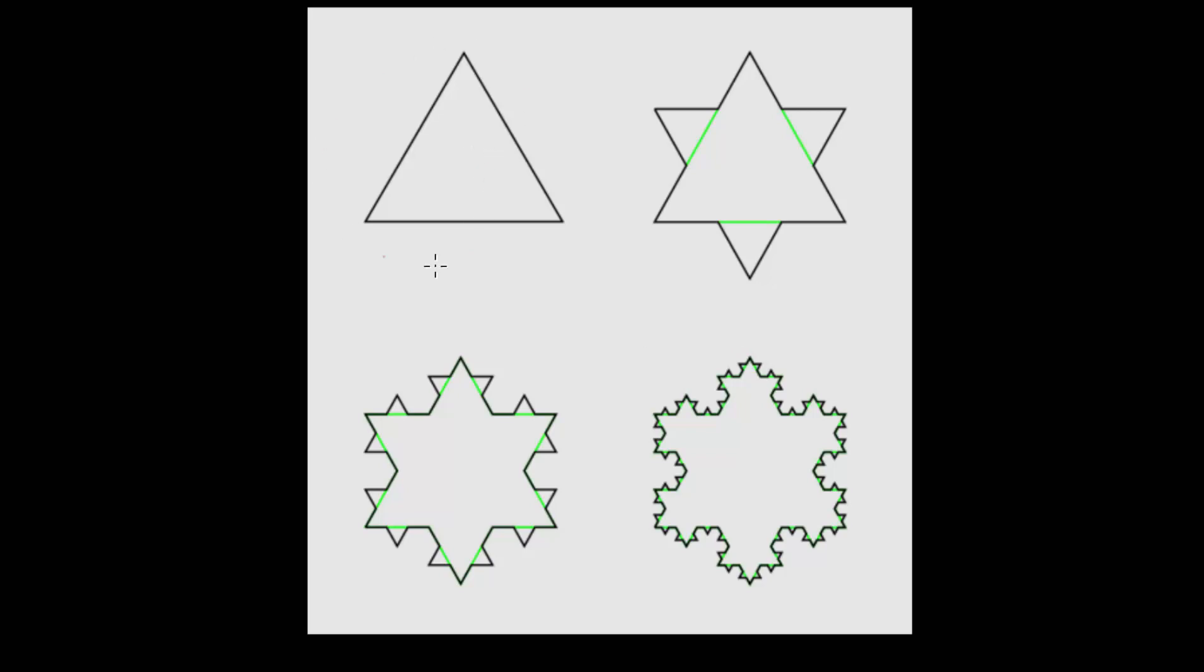This is our starting shape. We start with an equilateral triangle. What we'll do to create the snowflake is take each of these side lengths, and these are all equal side lengths because it's an equilateral triangle, and split these into three equal pieces.